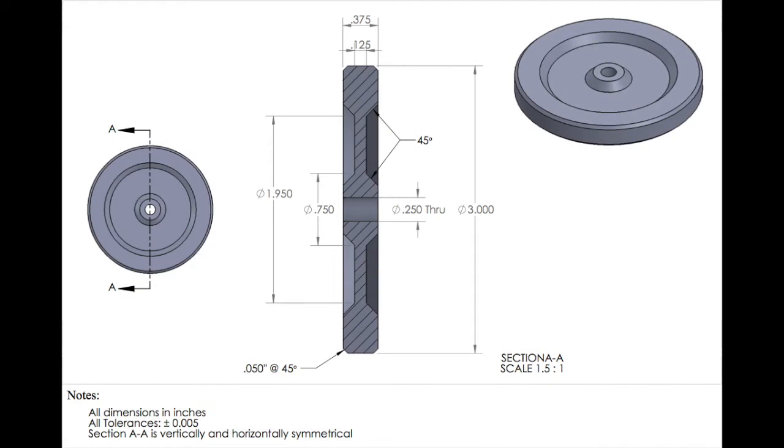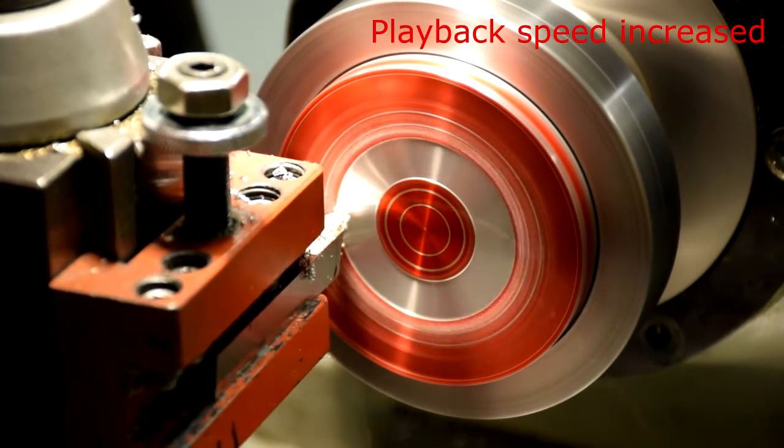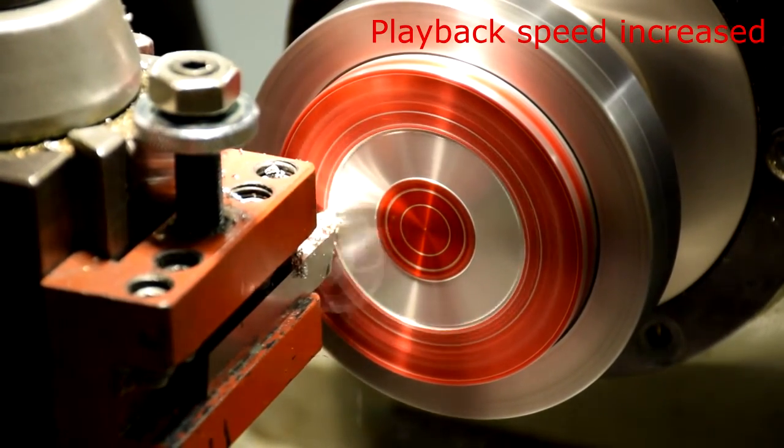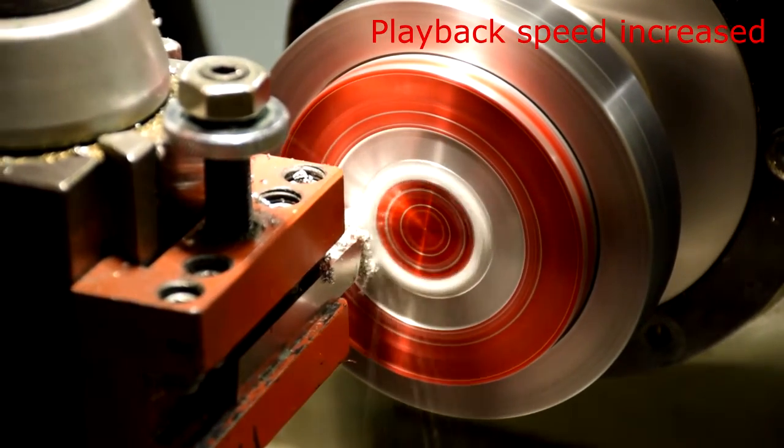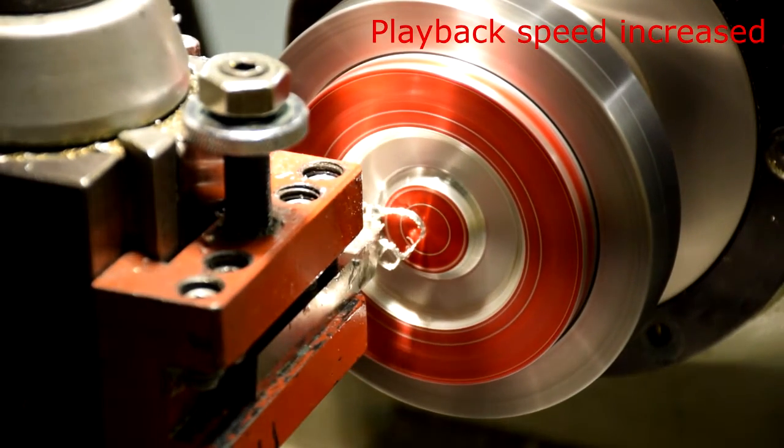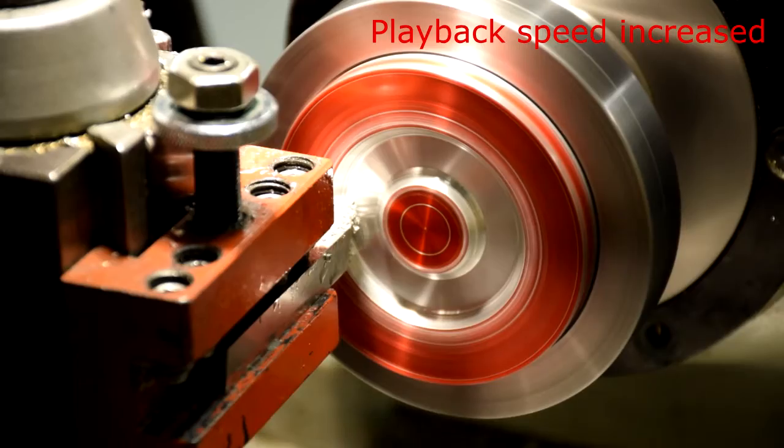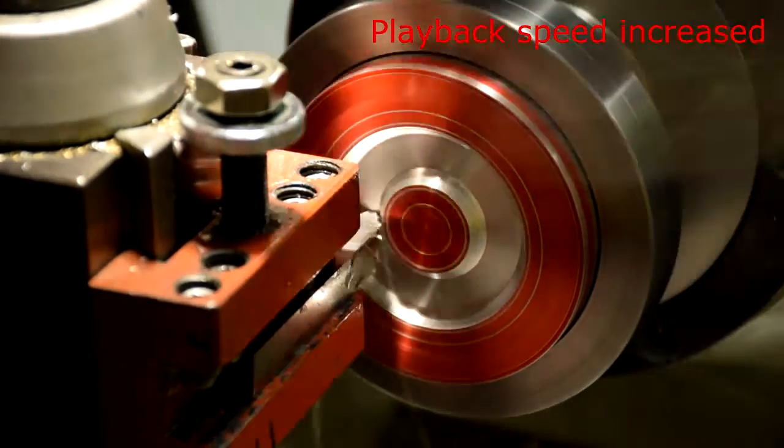Next, cut the channel in the flywheel. Zero on the face of the flywheel and cut 0.125 inches deep. Make sure to stay between the lines. Zero again at the depth of 0.125 inches.